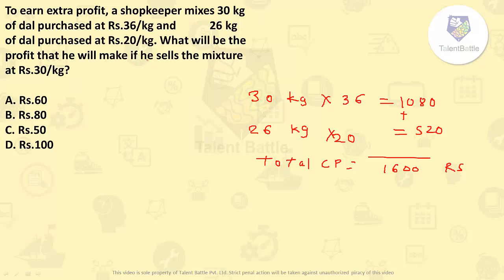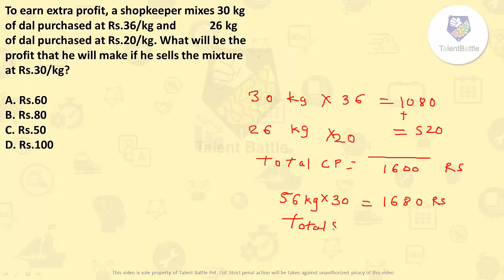He sells the mixture at 30 rupees per kg. The quantity of mixture is 30 + 26 = 56 kg. Selling price: 56 × 30 = 1680 rupees. Cost price was 1600 and selling price is 1680, so the profit is 80 rupees.